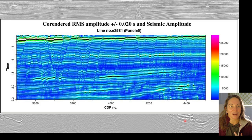So here's an example of the RMS amplitude co-rendered with seismic amplitude in more of a black and white. And so what you can see is that it does a really nice job of highlighting some of the potentially interesting amplitudes deeper, which weren't quite as apparent in the original seismic amplitude data itself.